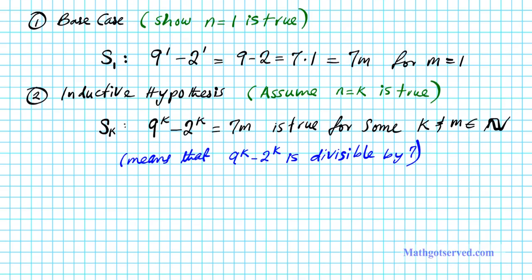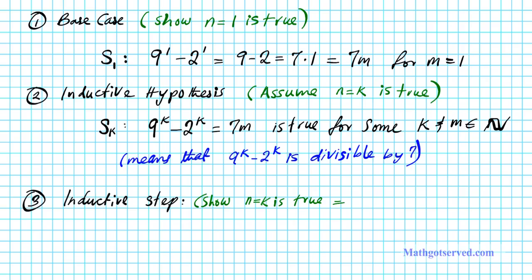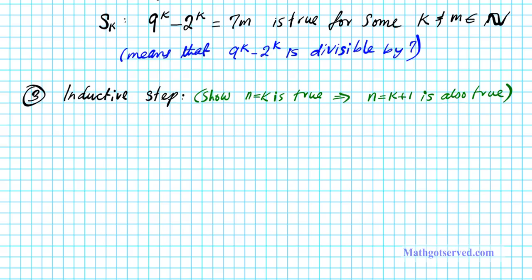Part 3 is the inductive step. We're going to show that n equals k being true by assumption implies that the next step, n equals k plus 1, is also true — and if we can show this, we conclude by induction that the statement is always true. We start with S(k+1): 9 to the k plus 1 minus 2 to the k plus 1.